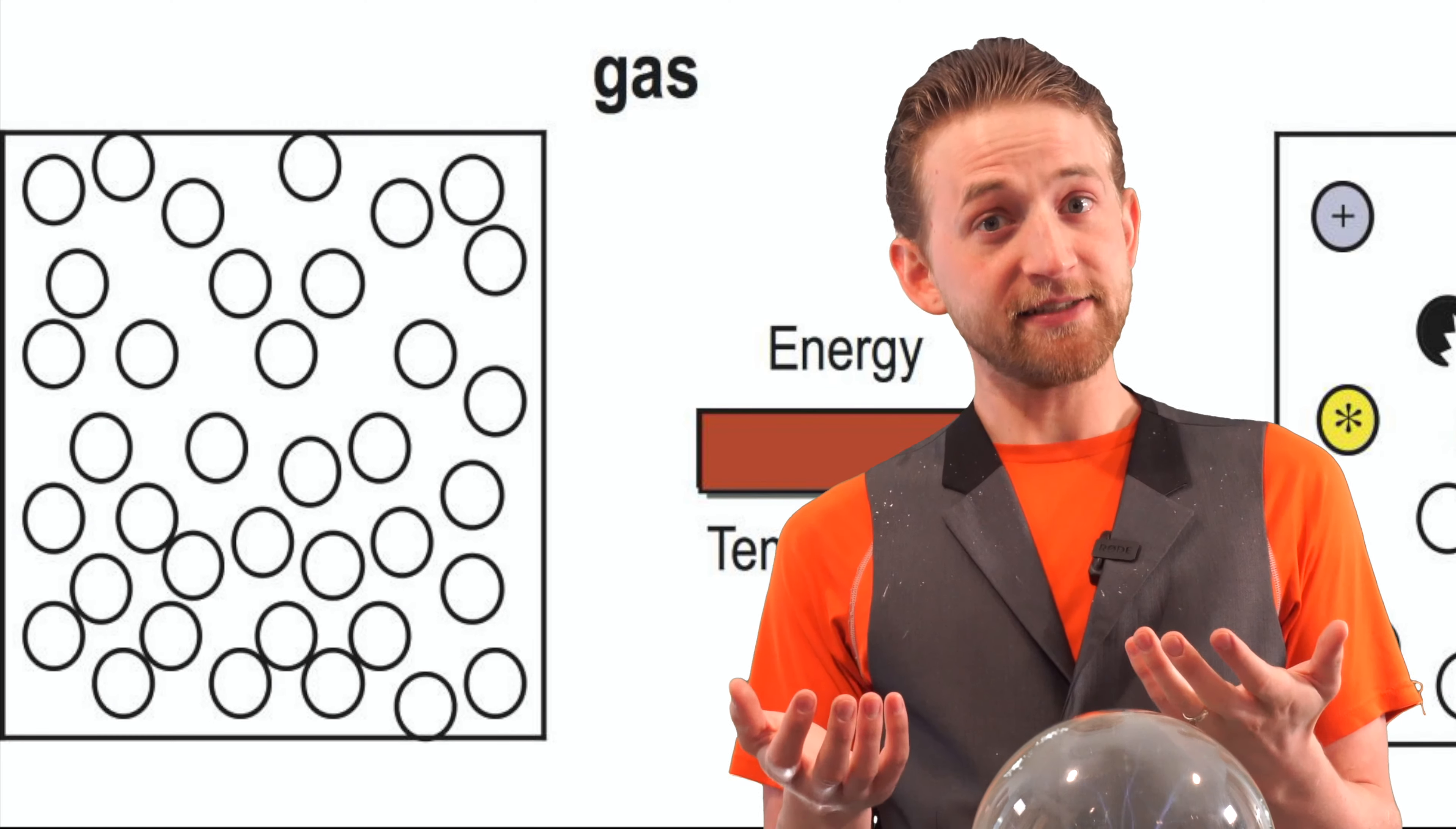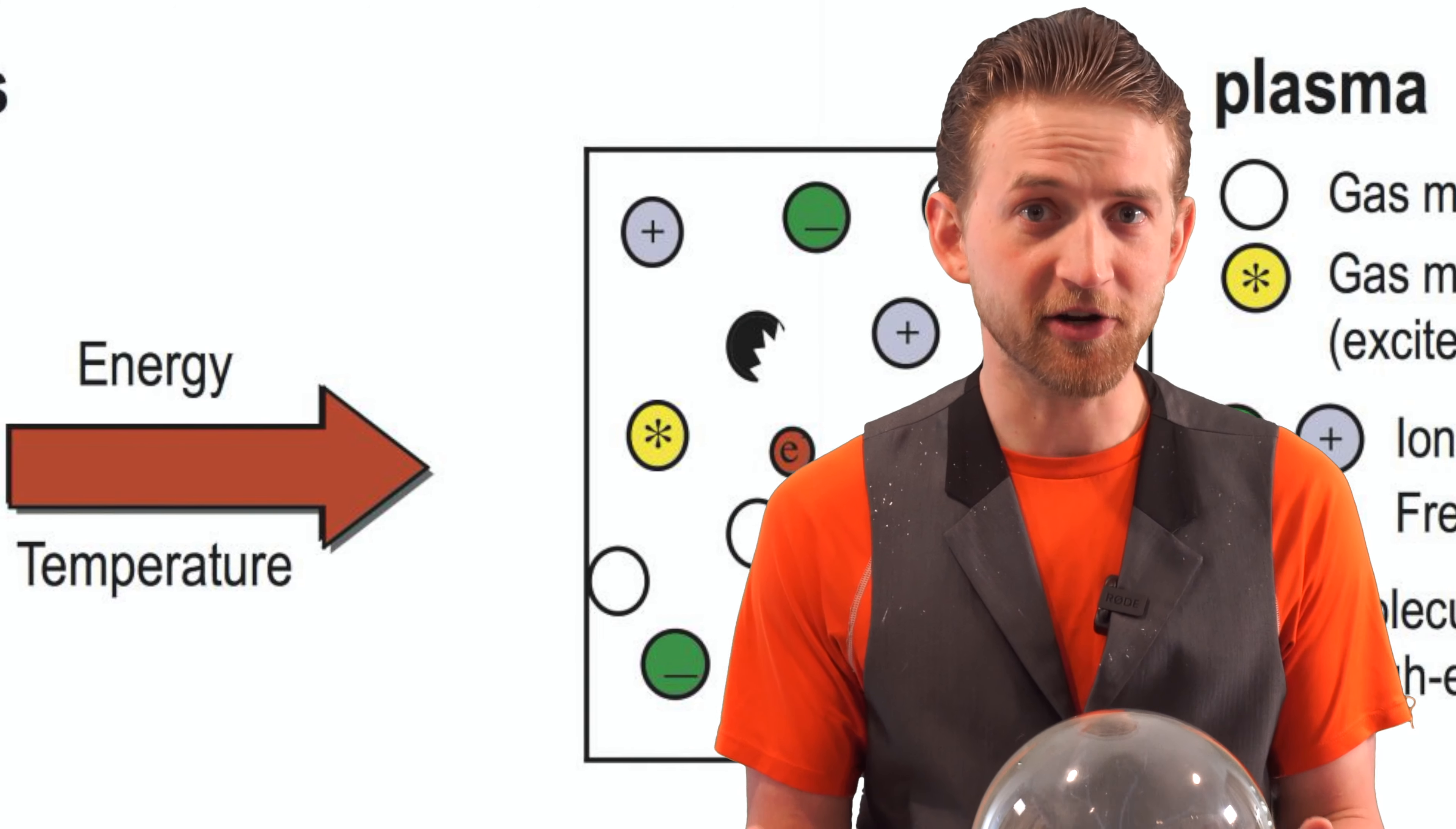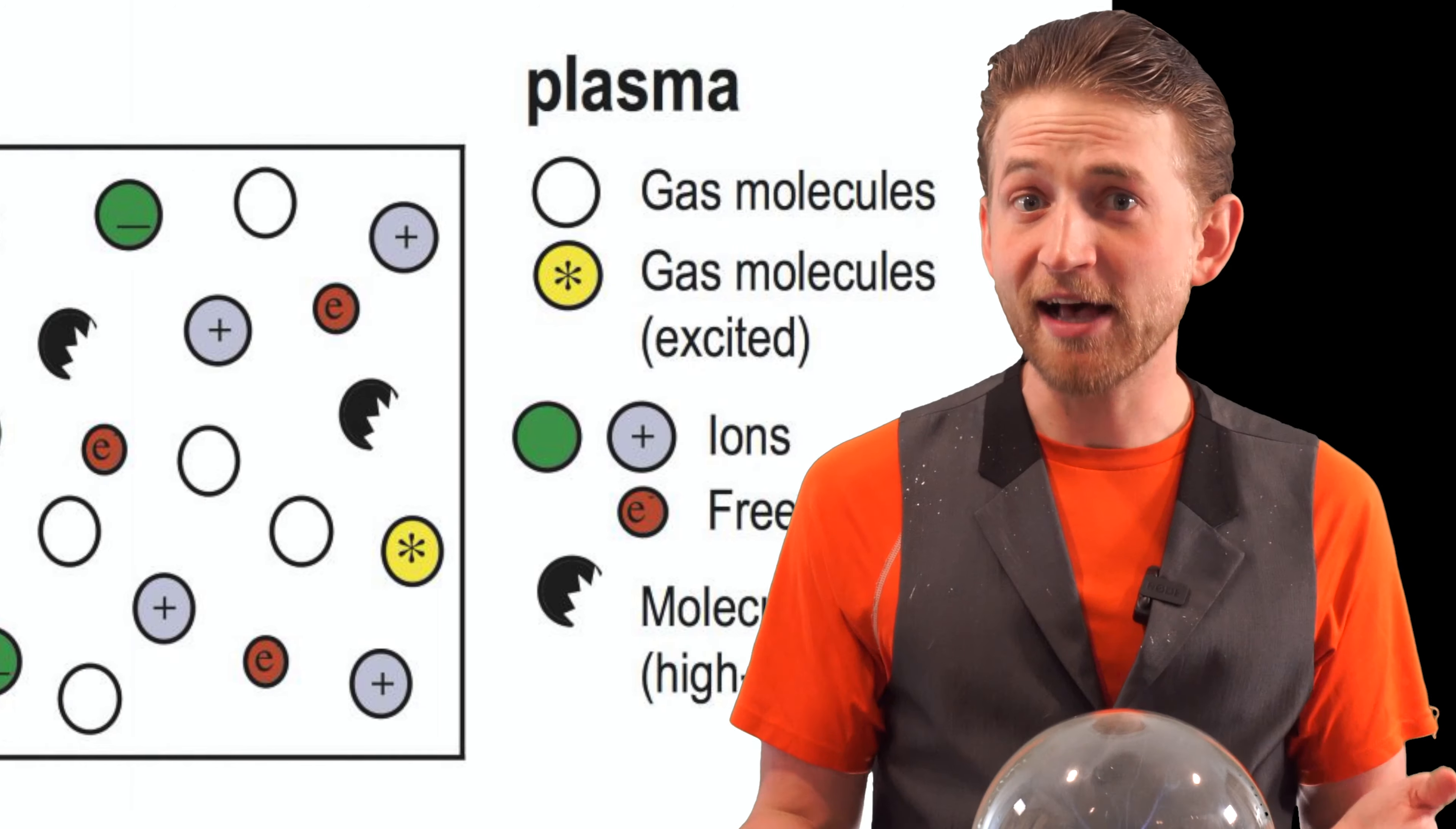So what is plasma? Plasma is a gas that receives so much energy that the atoms lose their electrons, creating a sea of charged particles that isn't a gas, but it's definitely not a solid. It's plasma.